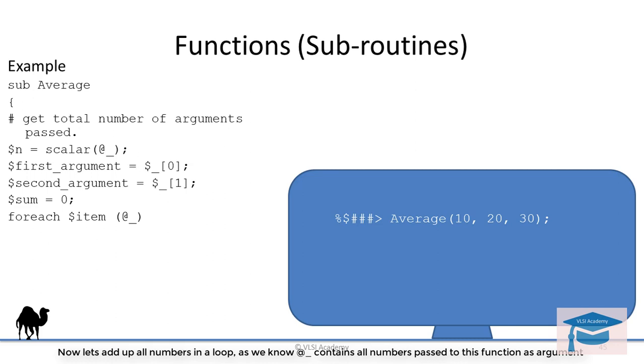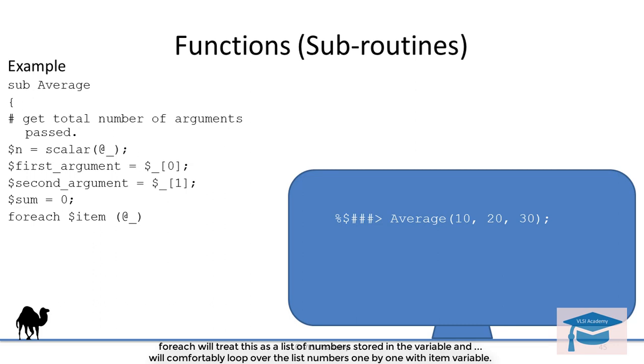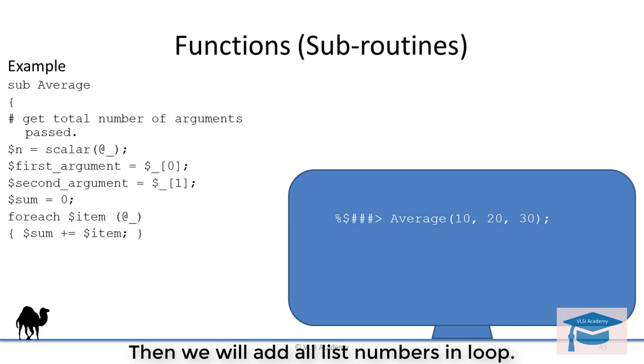Here, as we know, @_ contains all numbers passed to this function as argument. So for each, we will treat @_ as a list of numbers stored in the variable and will comfortably loop over the list numbers one by one with the item variable. Then we will add up all the list numbers in the loop.